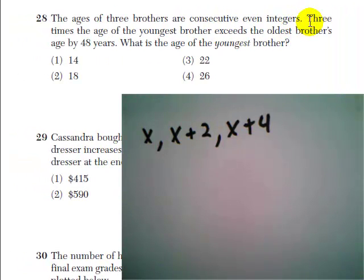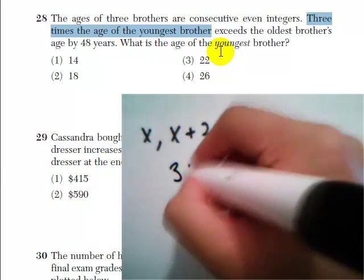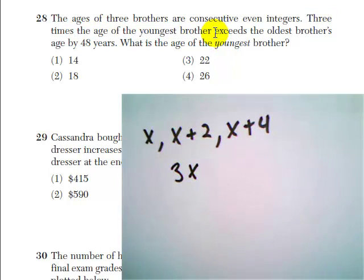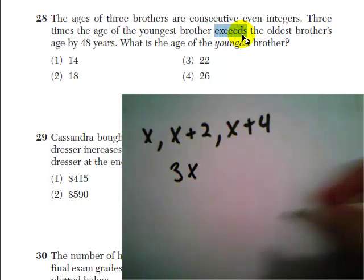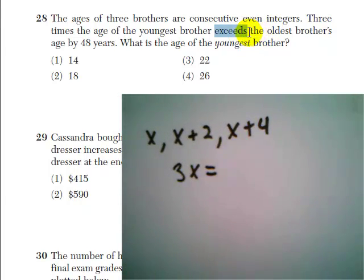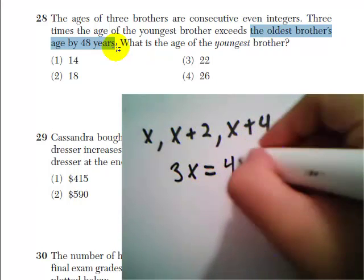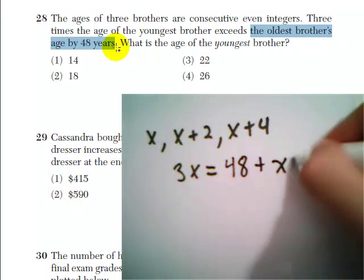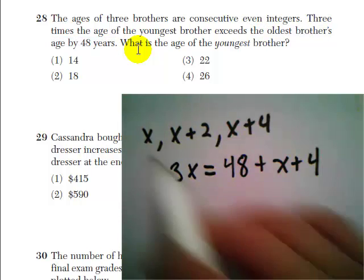Now the second sentence tells us that three times the age of the youngest brother exceeds the oldest brother's age by 48 years. So exceeds is telling me there's addition involved here. Three times the age of the youngest brother is equal to 48 plus the oldest brother's age.